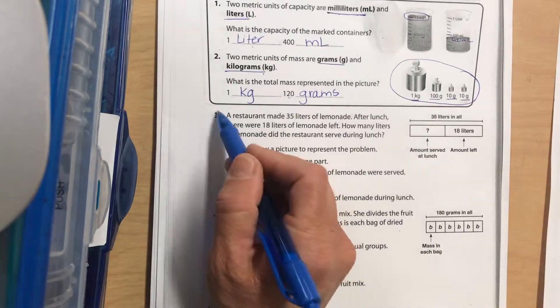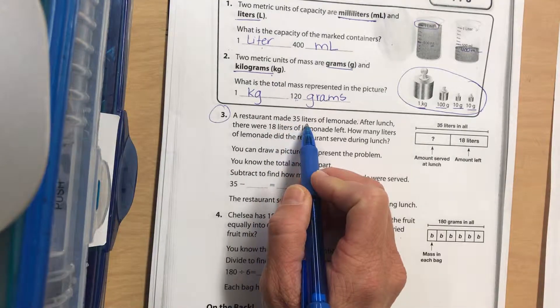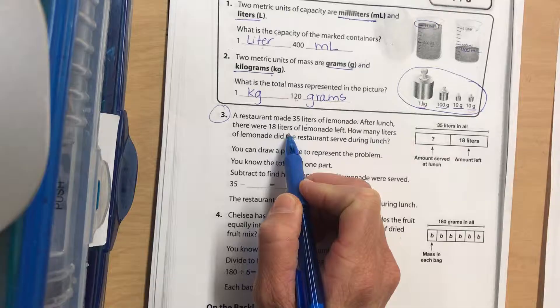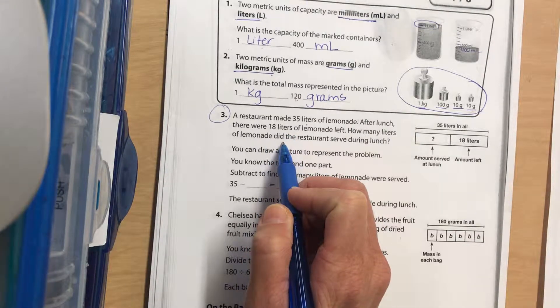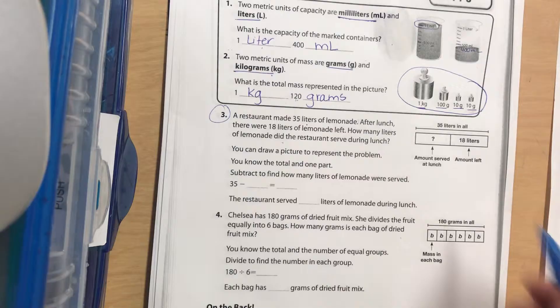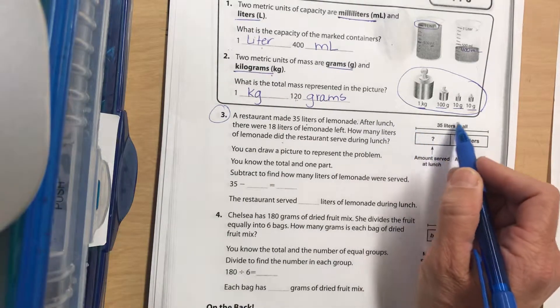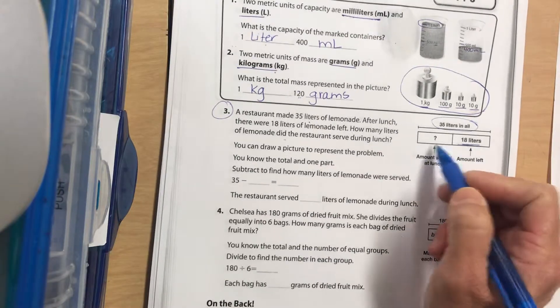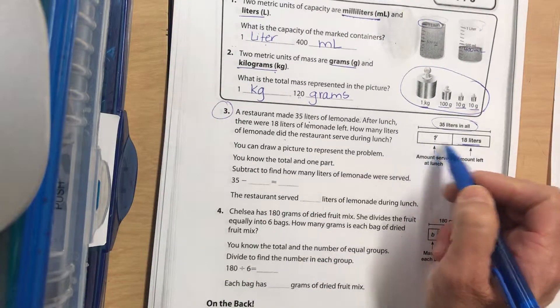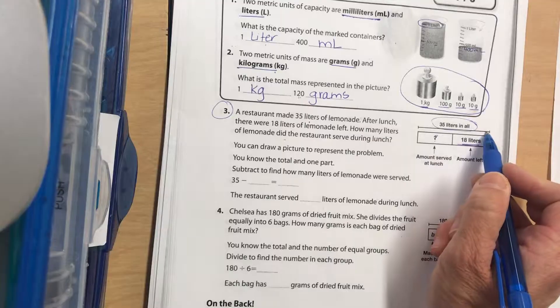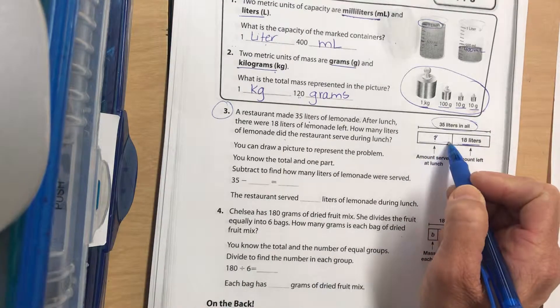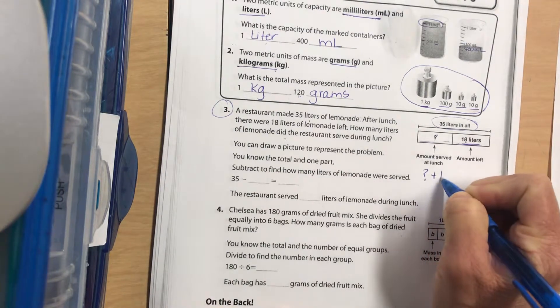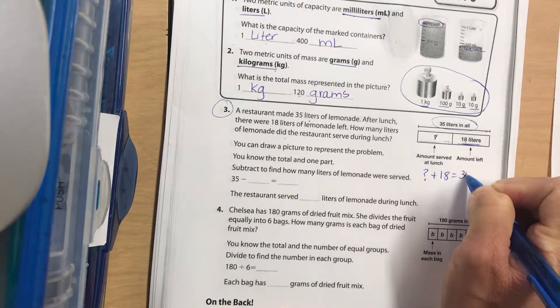All right, let's take a look at number three. A restaurant made 35 liters of lemonade. After lunch there were 18 liters left. How many liters of lemonade did the restaurant serve during lunch? If we look at our bar diagram, our total is at the top: 35 liters in all. We have the amount that's left, and then our missing number is how much we sold during lunch. So we have something plus 18 equals 35.